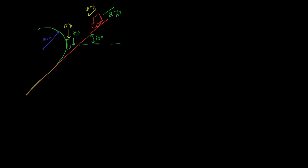In this problem that deals with relative motion we have two cars. This is going to be car B, and car B is coming around this curve that has a radius of 100 meters. It's traveling at 12 meters per second and has an acceleration of 3 meters per second squared.